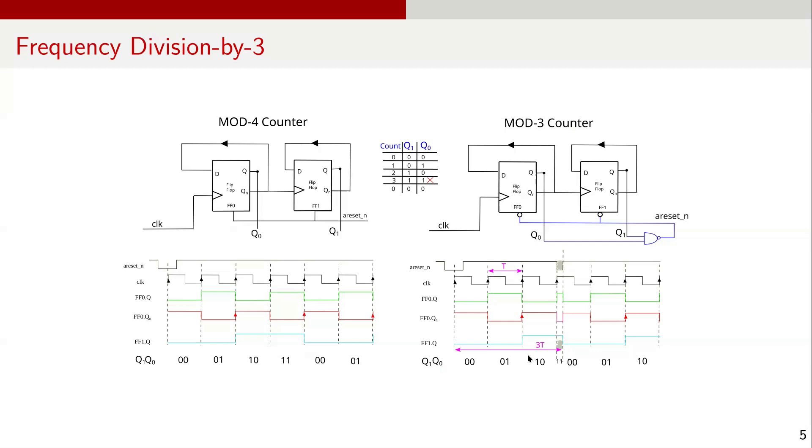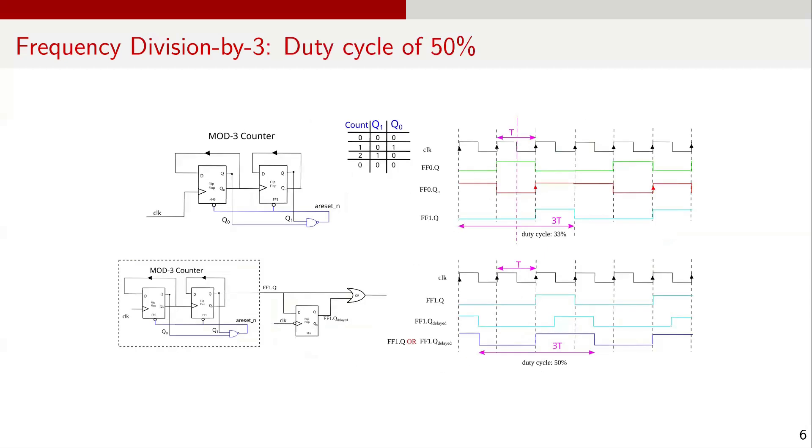Now, if you look at the signal at FF1Q, you see that its frequency is f over 3 or the time period is 3T, but its duty cycle is about 33%. Just to recap, duty cycle is the percentage of time a signal stays on or logic 1 during its total time period. It is calculated by dividing the on time by total time period and multiplying by 100. In most practical cases, we prefer to generate clock signals with 50% duty cycle, which have equal high time and low time.